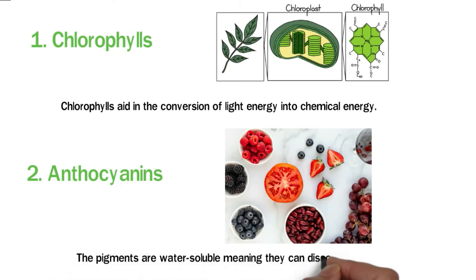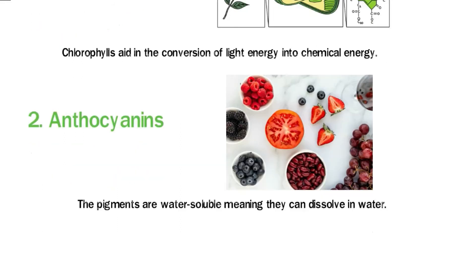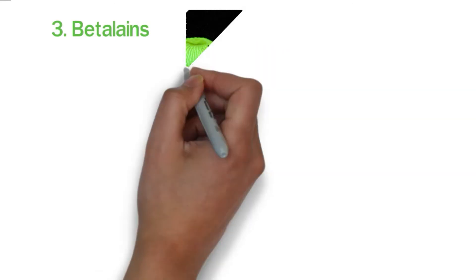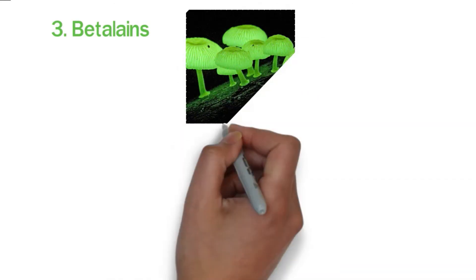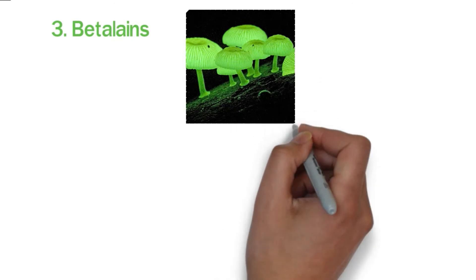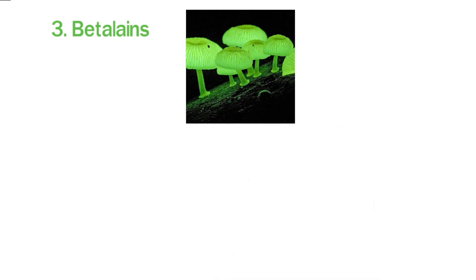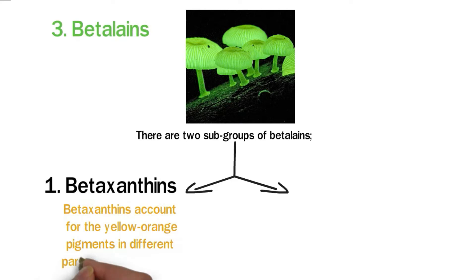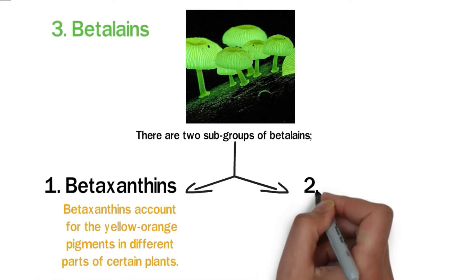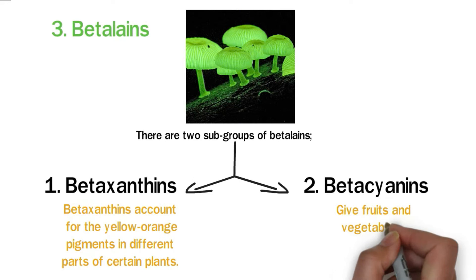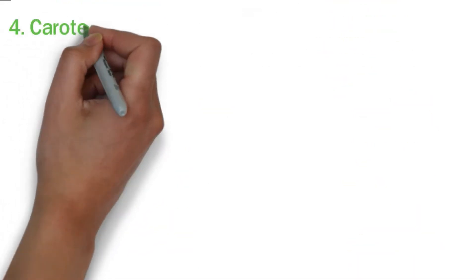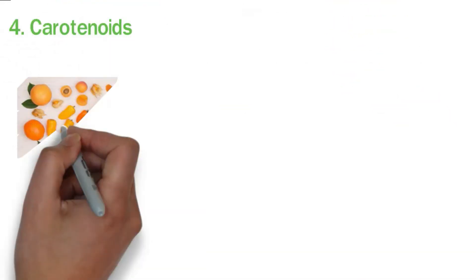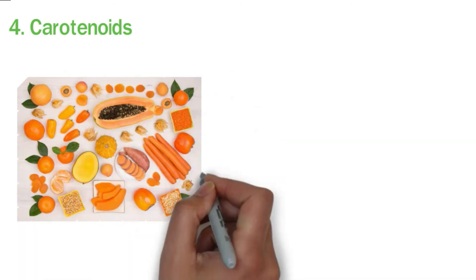Anthocyanins are water soluble, meaning they can dissolve in water. Third, betalins: betalins are nitrogen-containing plant pigments exclusively found in fungi and plants of the Caryophyllales order. Betalins are water soluble and have two subgroups. Beta-xanthins account for the yellow-orange pigments in certain plants, while beta-cyanins give fruits and vegetables a red-violet pigment. Fourth, carotenoids: carotenoids produce rich orange, red, and yellow colors in plants by absorbing indigo and blue light.